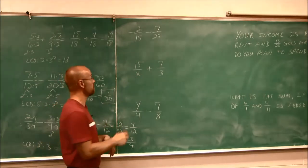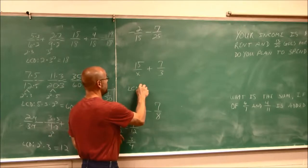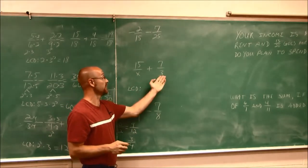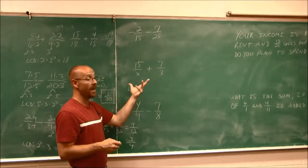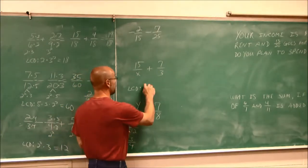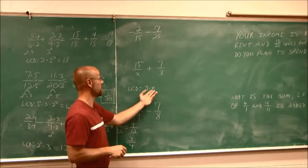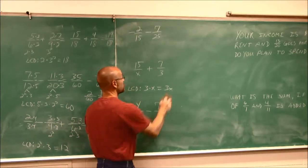Well, we have to treat that as a prime number. So if I want to find my LCD, this I assume is a prime number. This is a prime number. So they have unique factors in each of them. Well, when that happens, we just multiply them together. 3 times x is 3x.